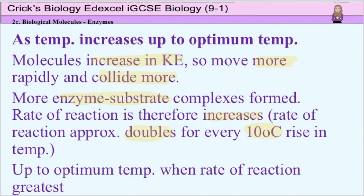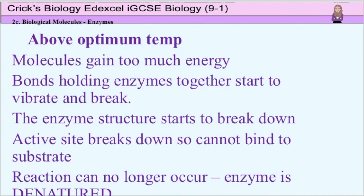This carries on up to the optimum temperature. At the optimum temperature, the rate of reaction is at its greatest. After the optimum temperature, the rate of reaction will start to decrease. If temperatures rise too much above the optimum, the molecules gain too much energy, meaning the enzymes gain too much energy and the bonds holding them together start to vibrate and break down. This means the enzyme structure starts to break down because there is nothing to hold it together. Therefore, the active site will start to break down, meaning it can no longer bind to the substrate, so no enzyme-substrate complexes can form. Therefore the reaction can no longer occur, and the enzyme is said to be denatured.